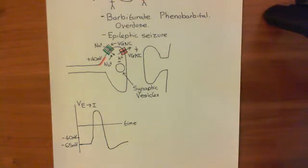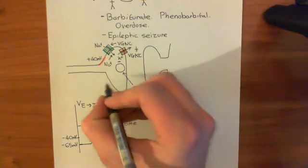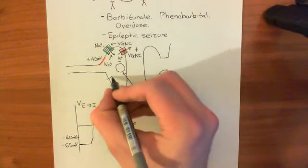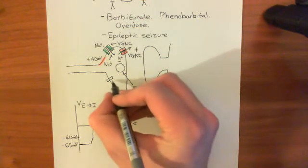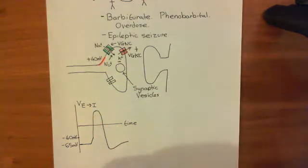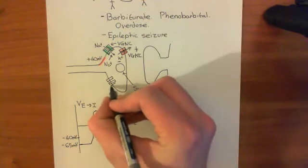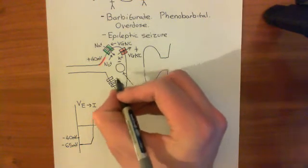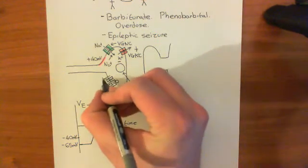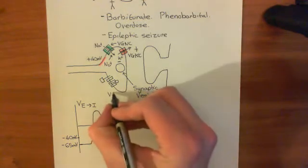That's the normal action potential within cells, but the important thing that happens in axon terminals is that we have another important channel. This is either an N-type or a PQ-type voltage-gated calcium channel, with its auxiliary subunits: the gamma subunit, the beta subunit, and the alpha-2 delta subunit.